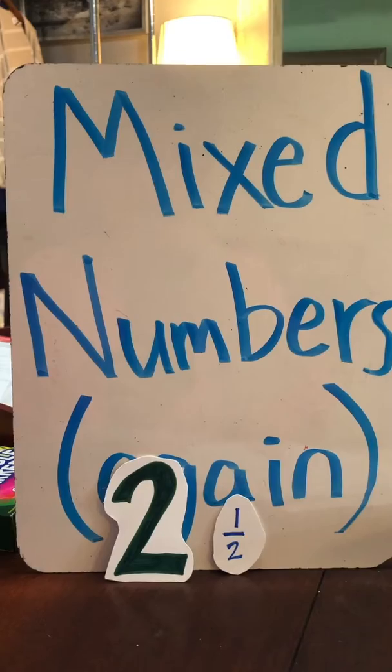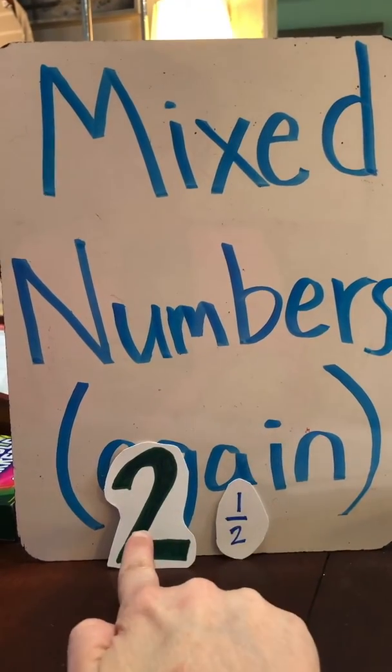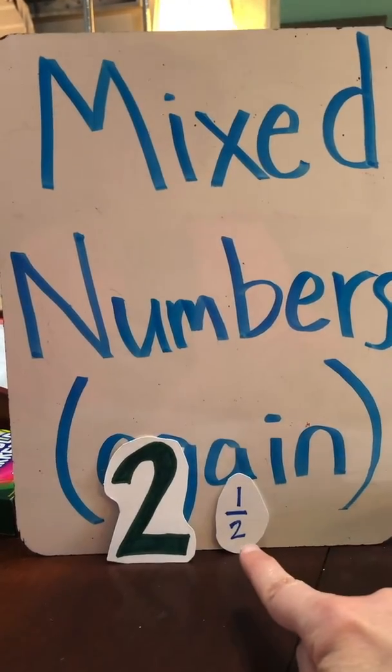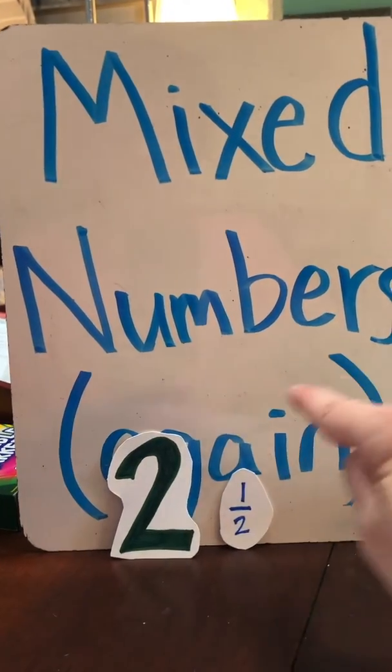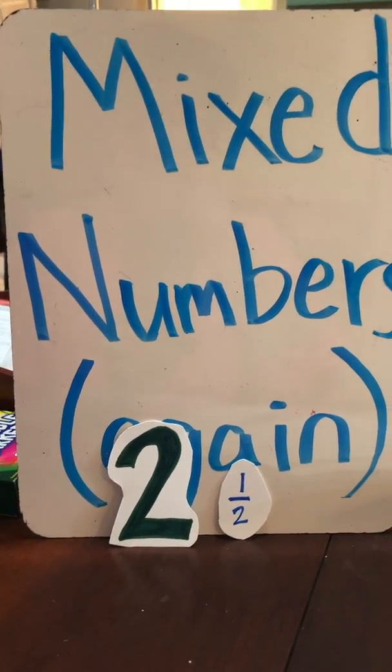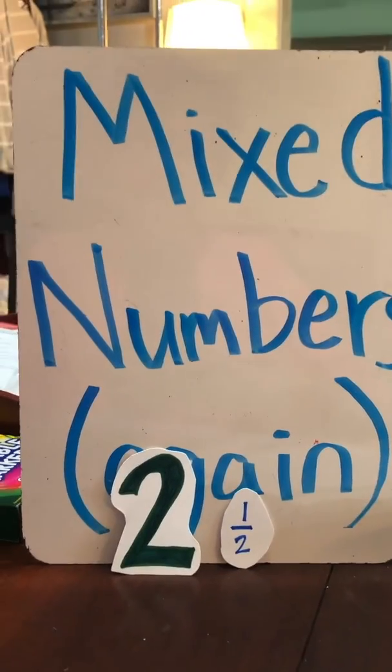Two and a half is a mixed number. Two is a whole number, one half is a fraction, and when you put them together and make them be friends, they become a mixed number of two and a half.